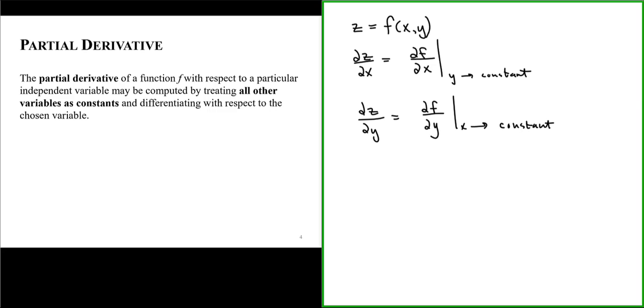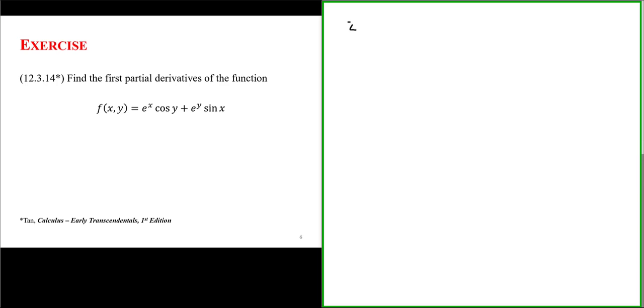Let's illustrate how this works with an example. Find the first partial derivatives of the function f(x,y) equals e to the x cosine of y plus e to the y sine of x. Here we have our function of the two independent variables x and y, and we're given that the function consists of the product of e to the x and cosine of y, plus the product of e to the y and sine of x.